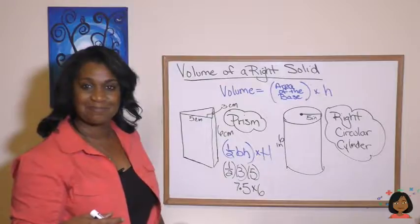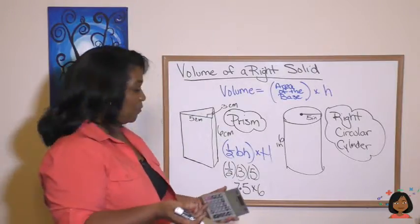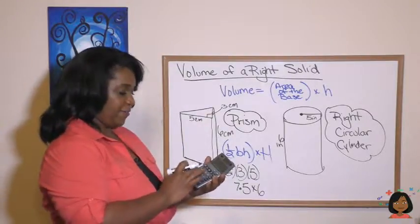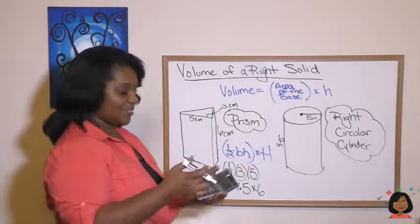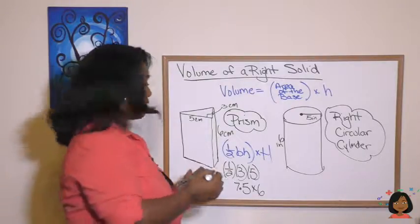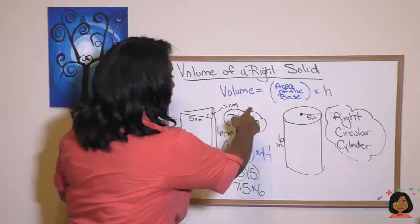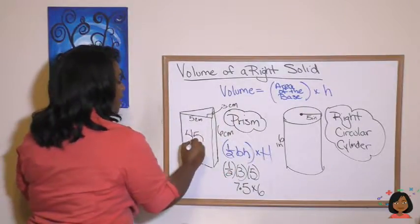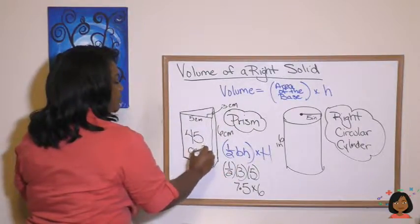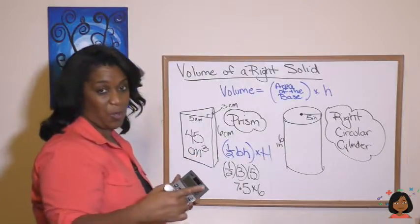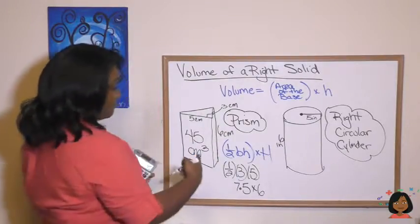So you can use your calculator to do this math here. Let me go grab my calculator. Here we go. 7.5 times 6 equals 45. So the volume of this is 45 centimeters cubed. Remember, volume is always going to be cubed.